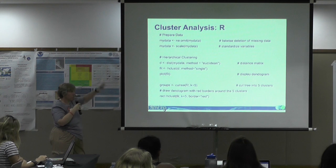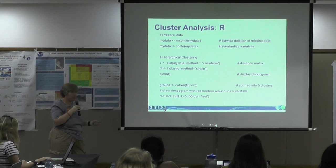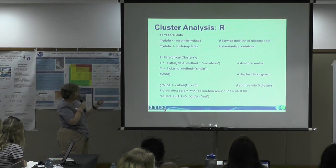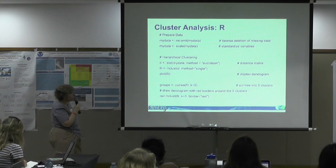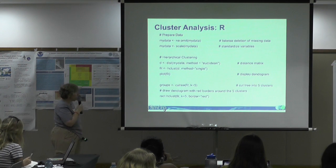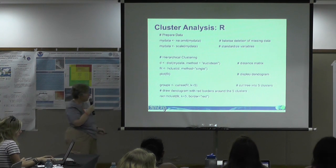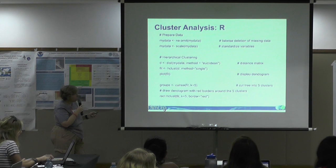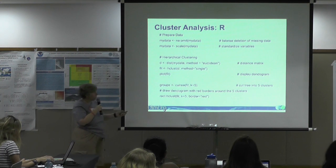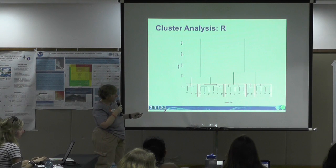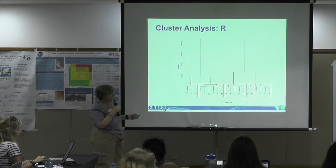Cluster analysis is pretty simple in R. Basically, if your data is the dataset, you remove missing data and clean up. You may need to standardise it if dimensions differ strongly. Then you apply a distance metric — in this case Euclidean — pick your clustering method, and plot your outcome. You can also put marks on the dendrogram to show where the clusters are; for example, here we said there are five clusters at this criterion point.